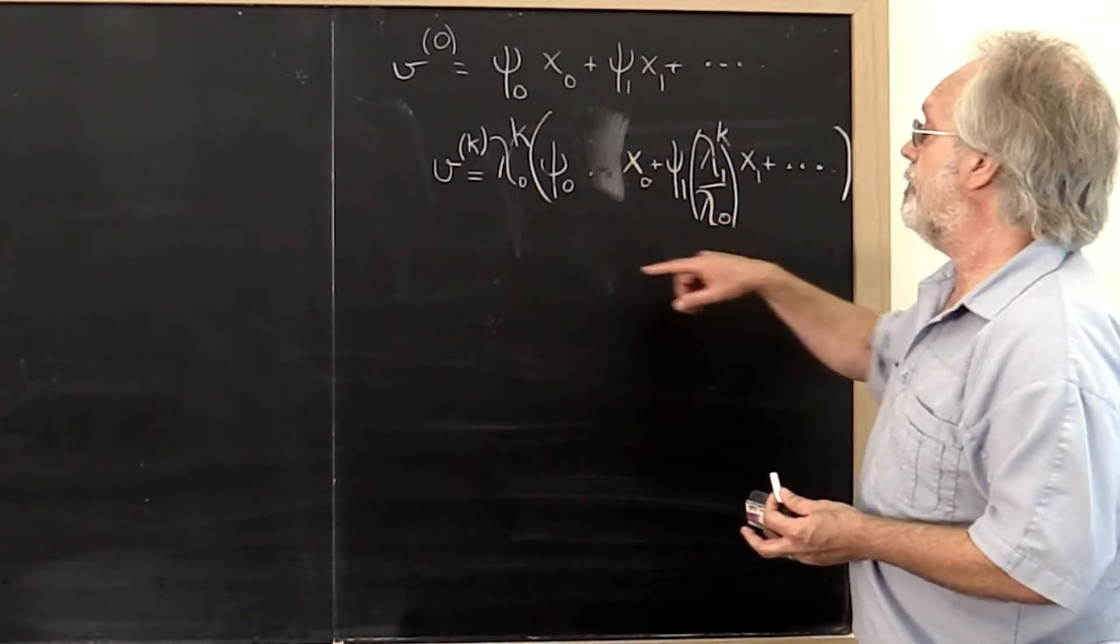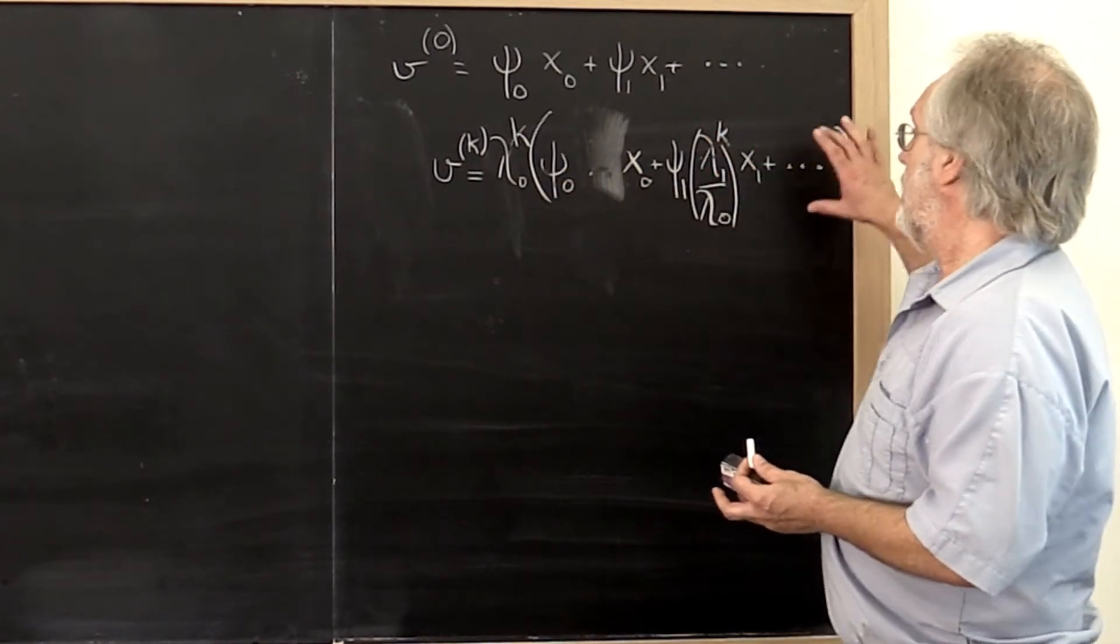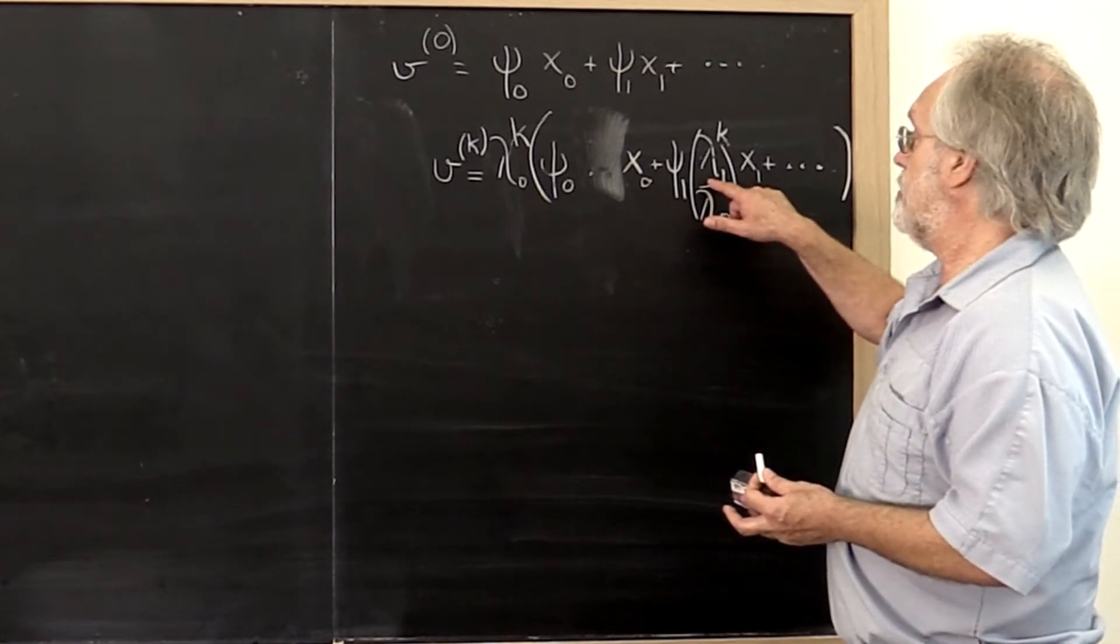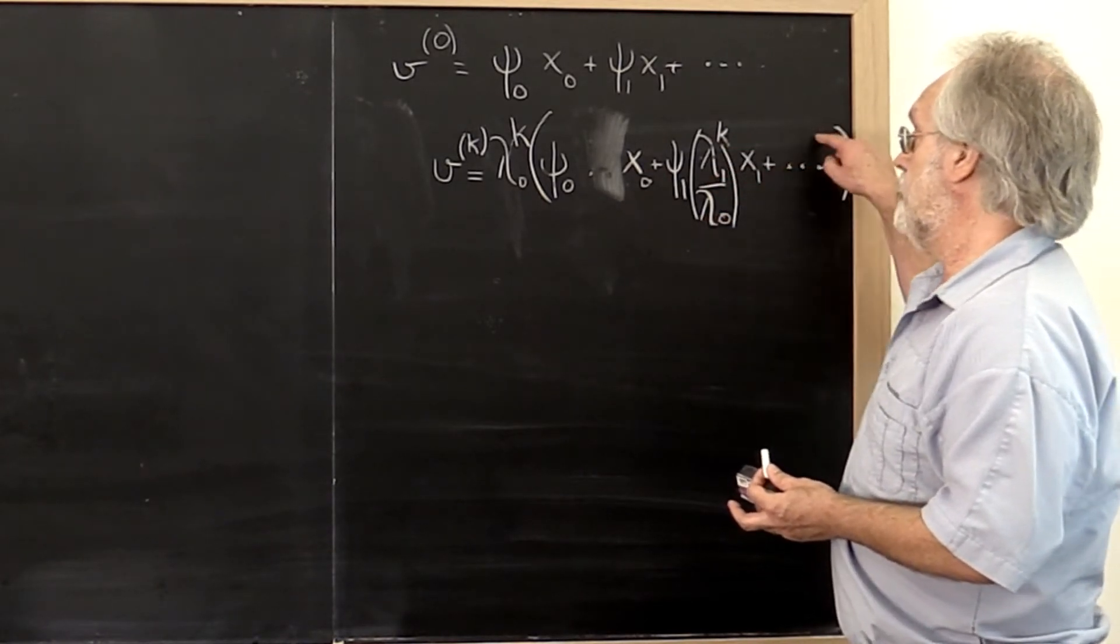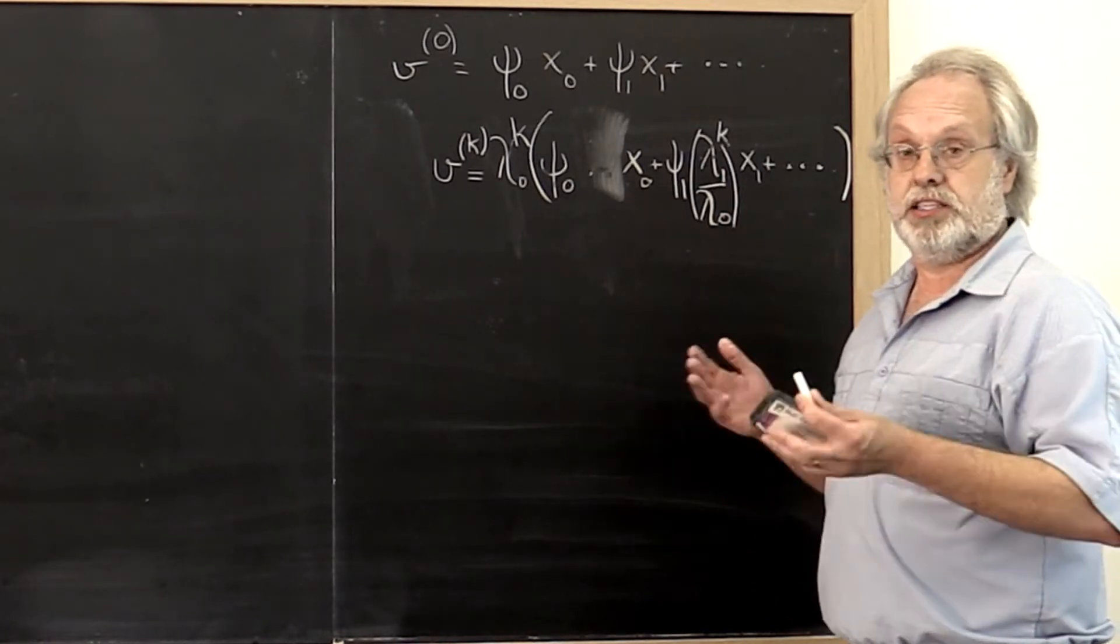Then what we could do is we could factor out lambda one to the k and then this would be one. And then all of these other terms would have coefficients that involved lambda two divided by lambda one, lambda three divided by lambda one, all raised to the kth power, etc.